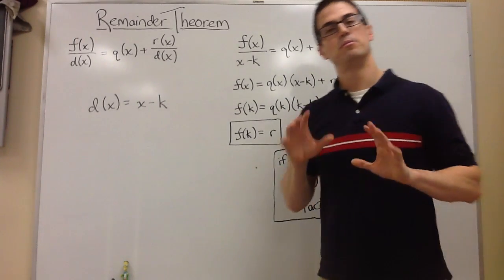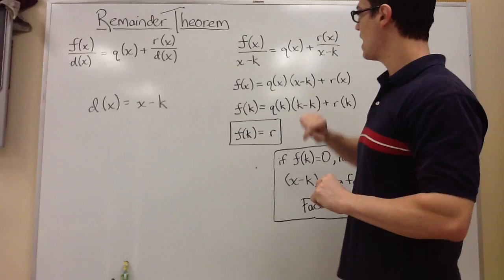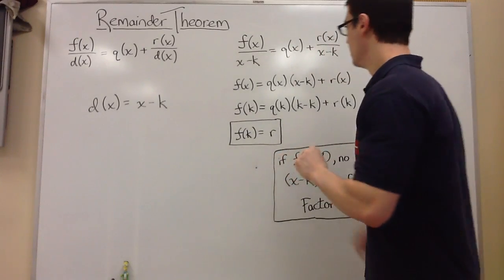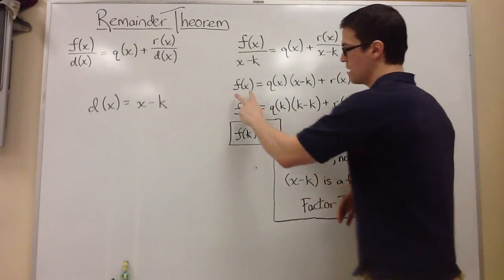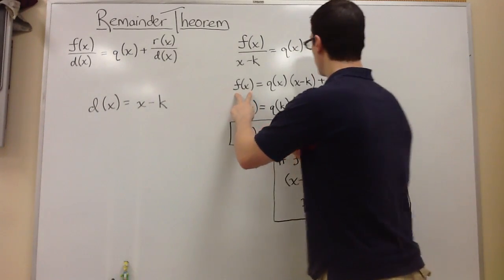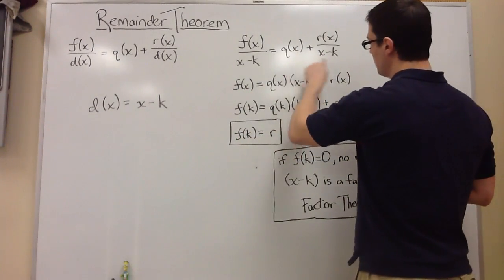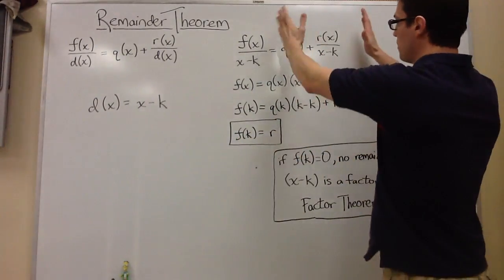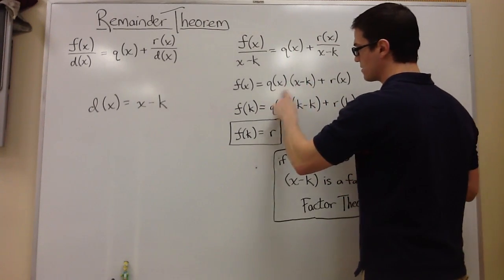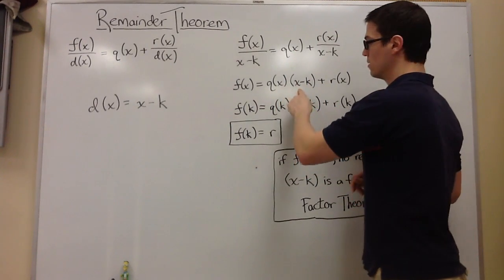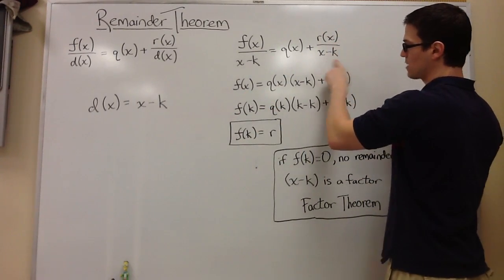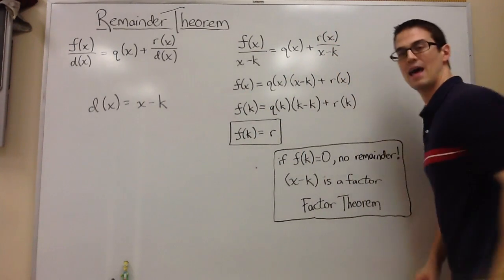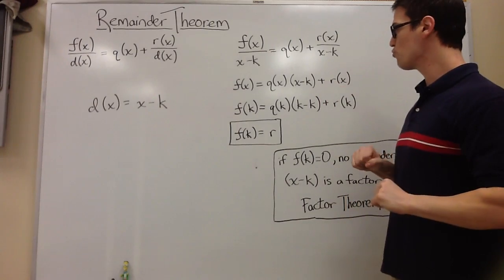Now what I'm going to do is multiply both sides by x minus k. I multiply this side, and since I'm dividing, it cancels off the x minus k, and you end up with just f of x. I'm doing q of x times x minus k. That's what you get right here. And the r of x over x minus k, the x minus k cancels, and you're left with r of x, the remainder.